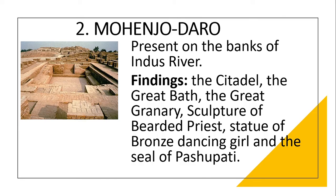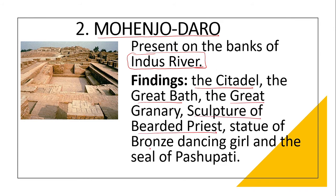The next city is Mohanjodaro, present in present-day Pakistan. Mohanjodaro is located on the banks of the river Indus — not Ravi, Chenab, Sutlej, or Jhelum. The important findings here include the great citadel, the great bath, the great granary, the sculpture of the bearded priest, the statue of the bronze dancing girl, and the seal of Pashupati.